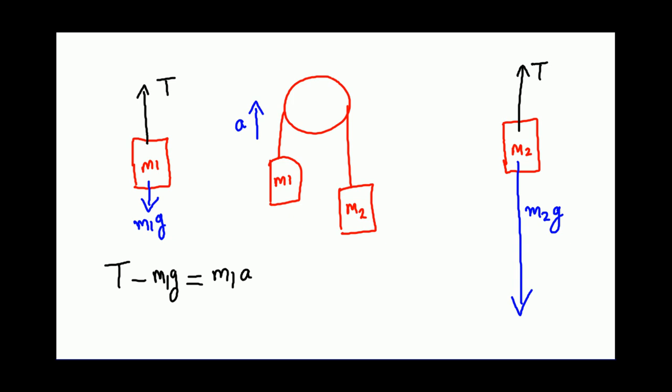If you go to the right for the mass M2, what do we have? The gravitational force is greater than tension, and that is the reason why you have acceleration down. So you say M2g minus T equals M2a.